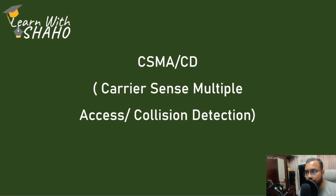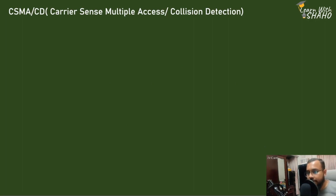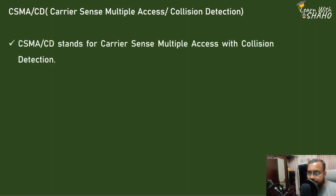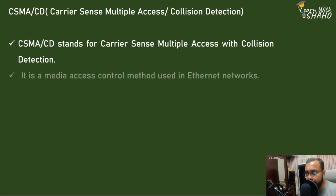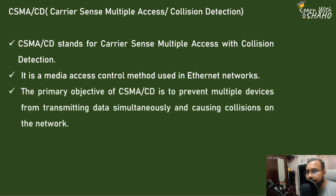Assalamu alaikum everyone, welcome to my new lecture video on data communication. The topic is CSMA/CD, that is Carrier Sense Multiple Access with Collision Detection. CSMA/CD stands for Carrier Sense Multiple Access with Collision Detection. It is a media access control method used in Ethernet networks. The primary objective of CSMA/CD is to prevent multiple devices from transmitting data simultaneously and causing collisions on the network.